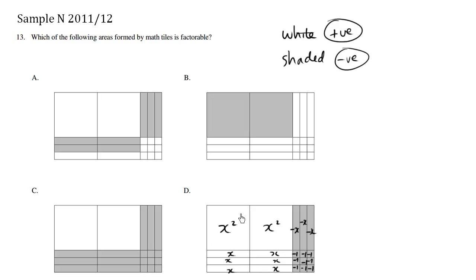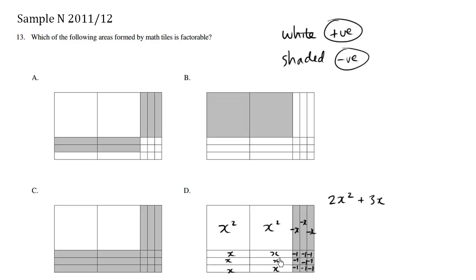So we add them all up together. For choice D, we have 2x squared, plus 6x minus 3x — giving a total of positive 3x, because 6x minus 3x is 3x — minus 9.